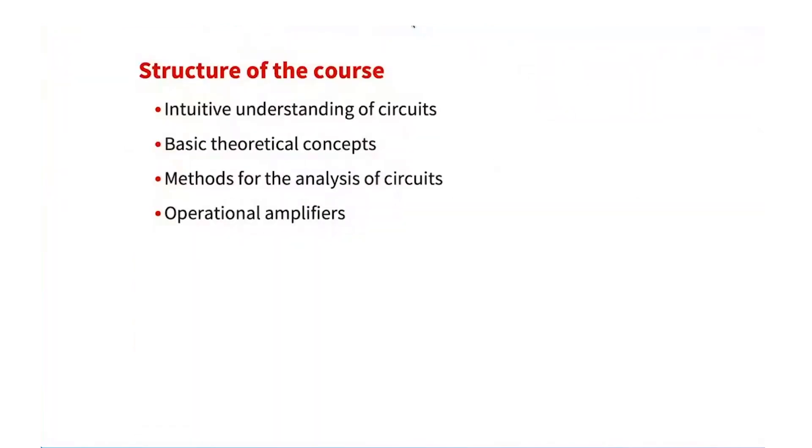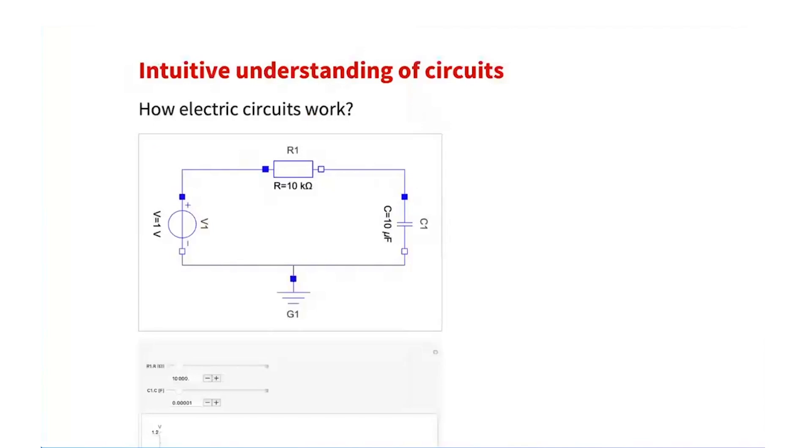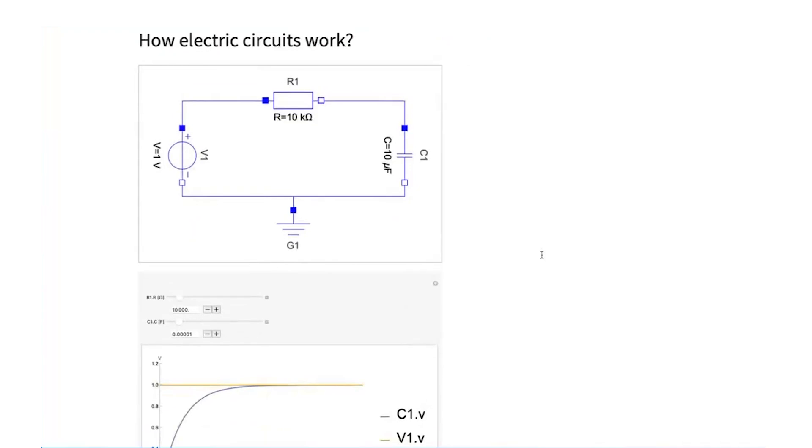The structure of the course is splitting four parts where we go from the basics to our final objective, which is learning operational amplifiers. In the first part, we try to explain without going into details how a simple electric circuit works. For example, here we have a circuit that consists of three main components, a capacitor, a resistor, and a voltage source.